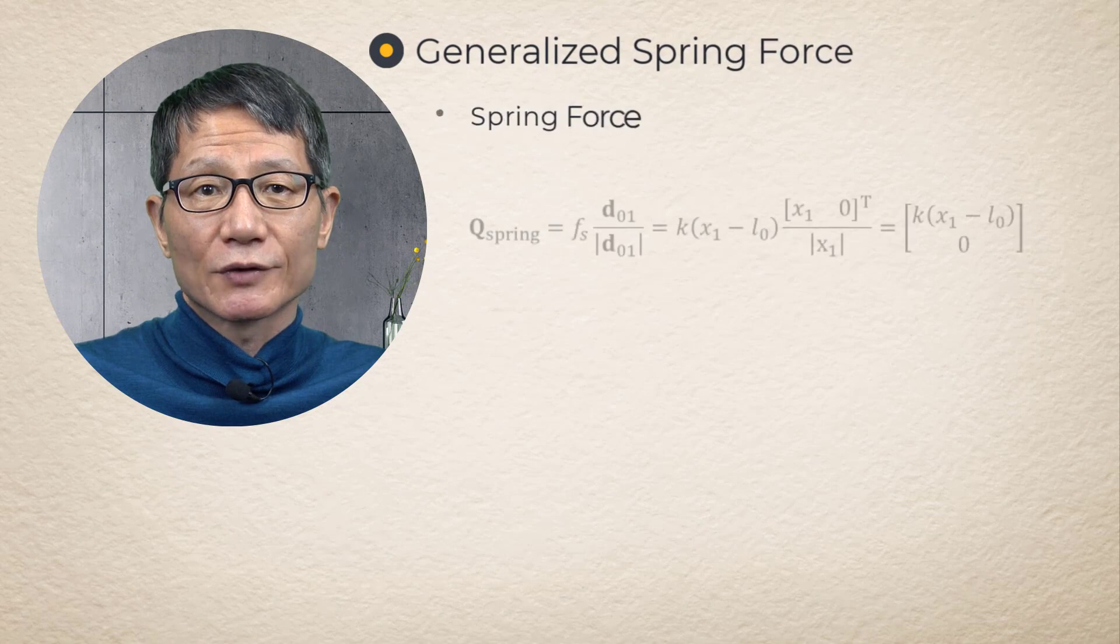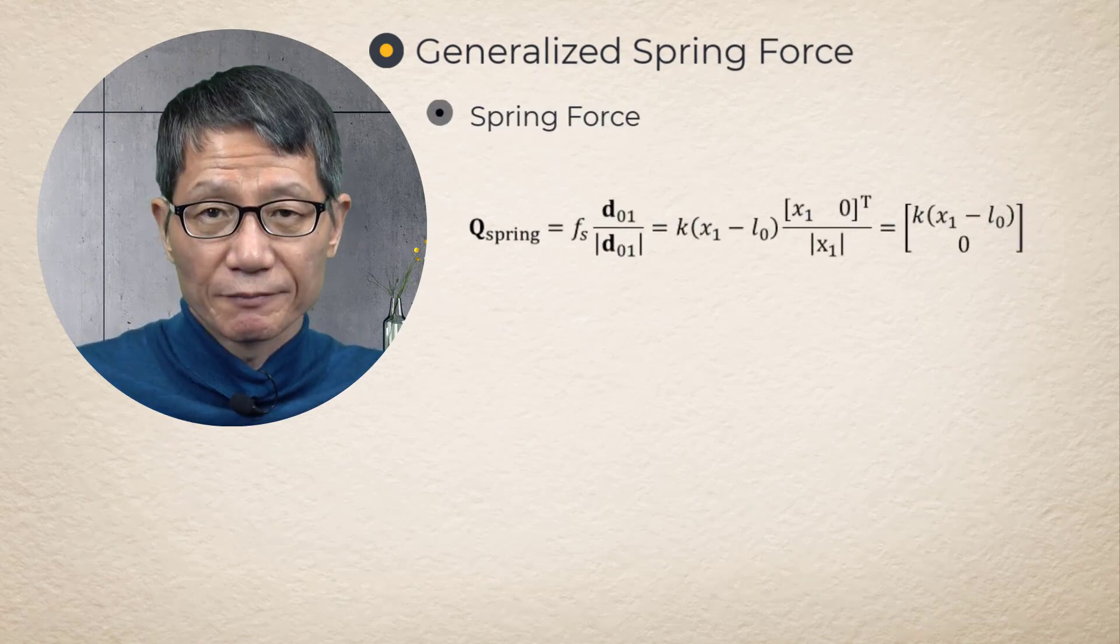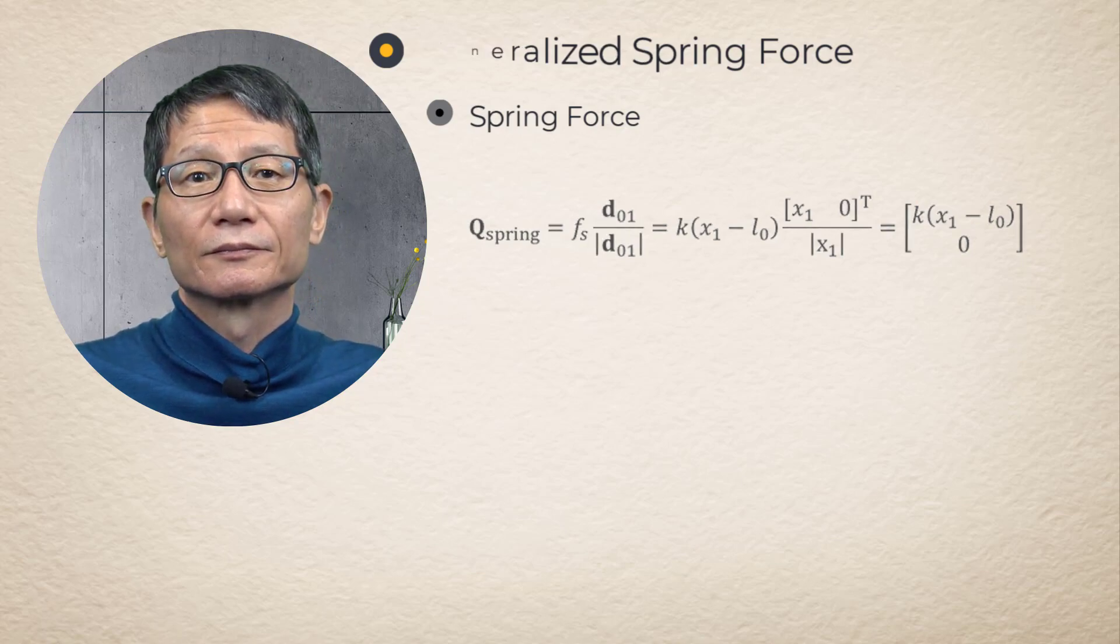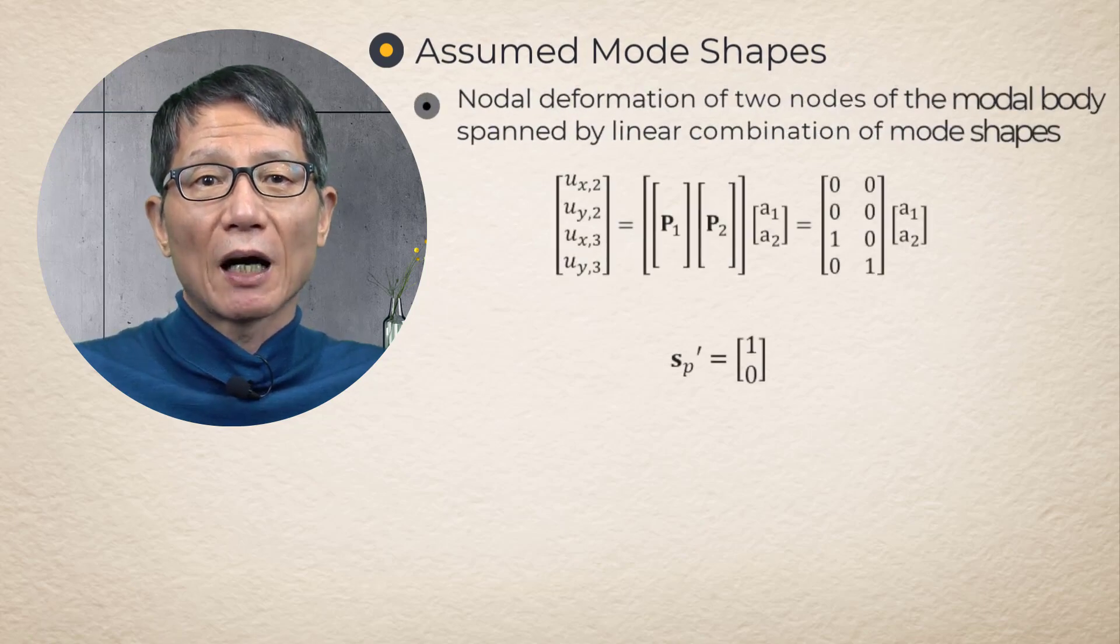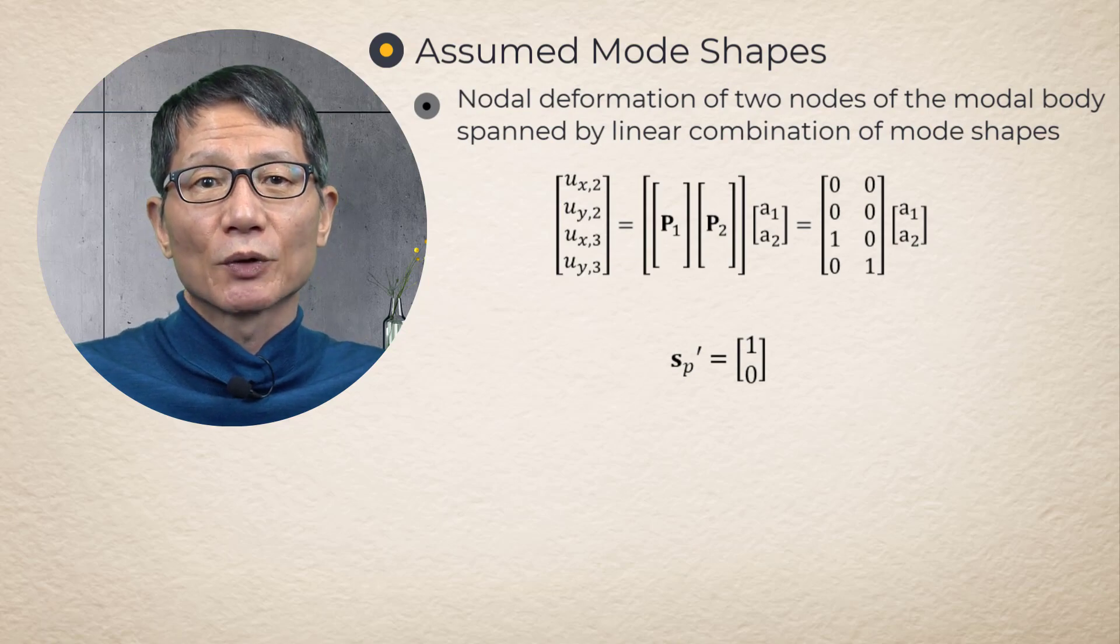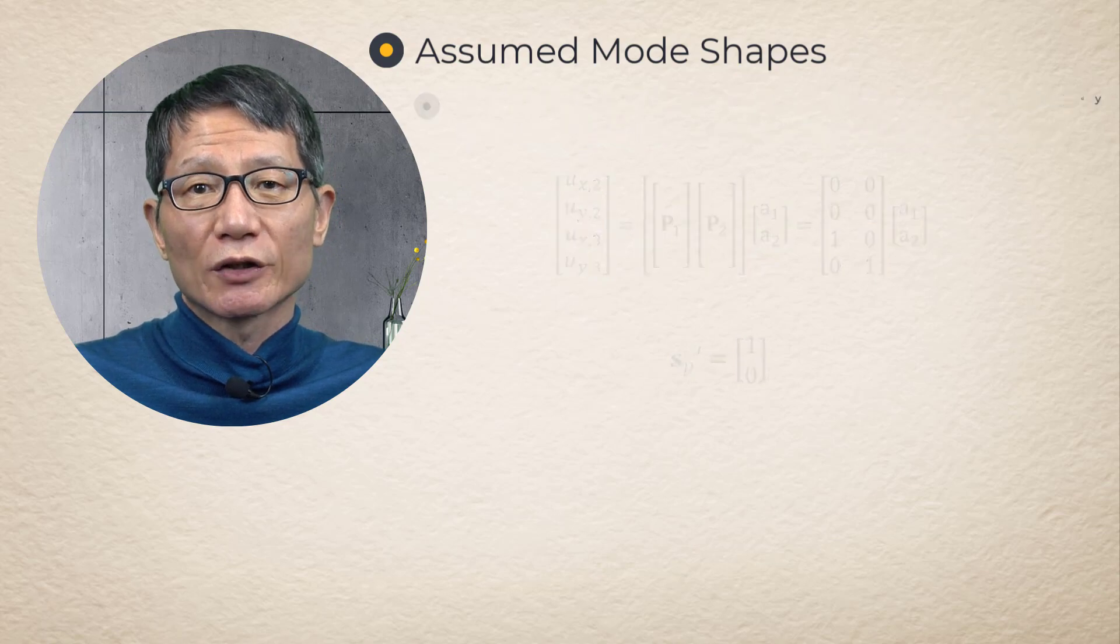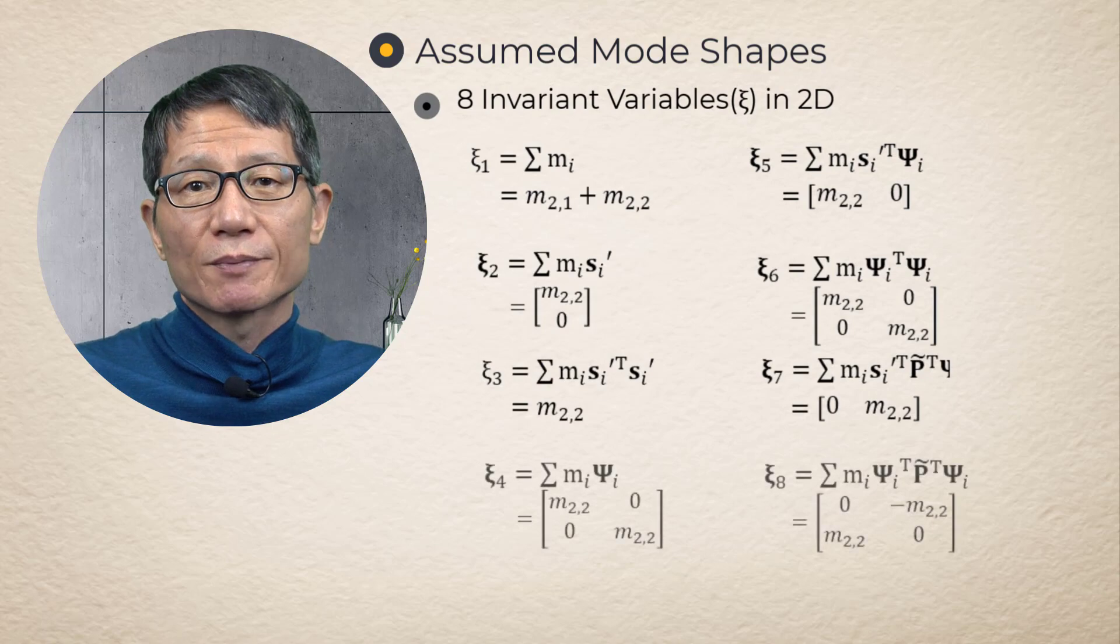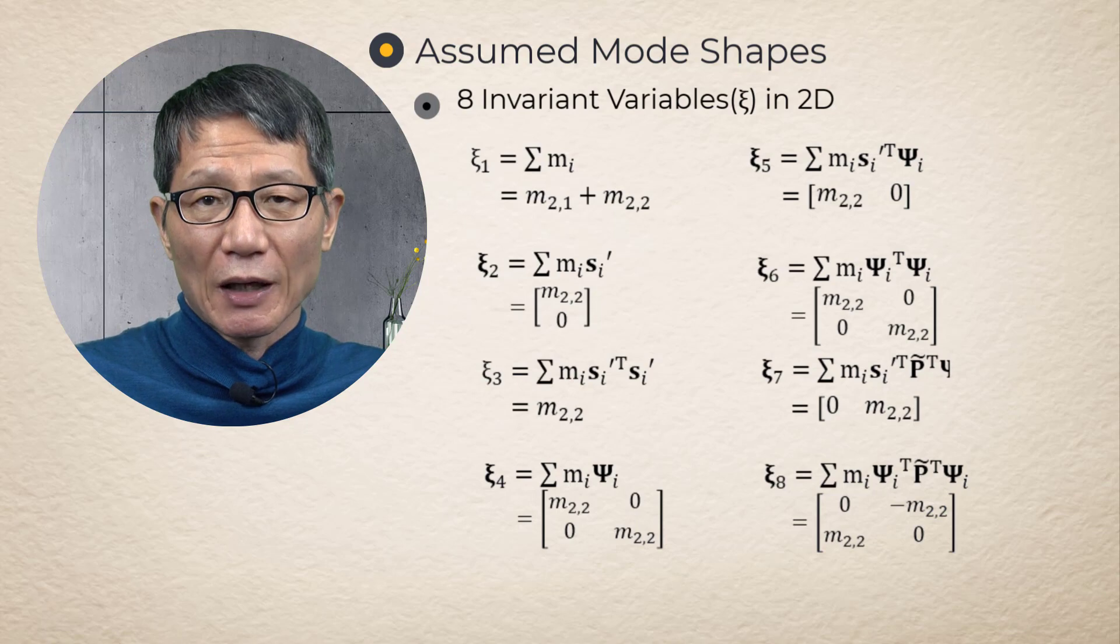Generalized spring force. Generalized force for the spring is obtained as follows. Assumed mode shapes. The mode shapes are assumed to make it easy to present the equation of motion for this example. Equation of motion can be obtained by applying the general form of equations of motion for a modal body which was presented earlier. The invariants are calculated as follows.